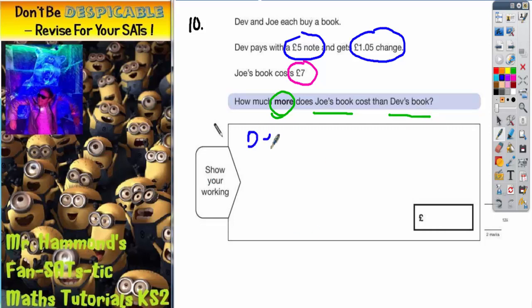Let's look at Dev first. He's paying with a five pound note and gets one pound five change. If you take off one pound five from five pounds, whatever's left will be how much Dev's book costs.